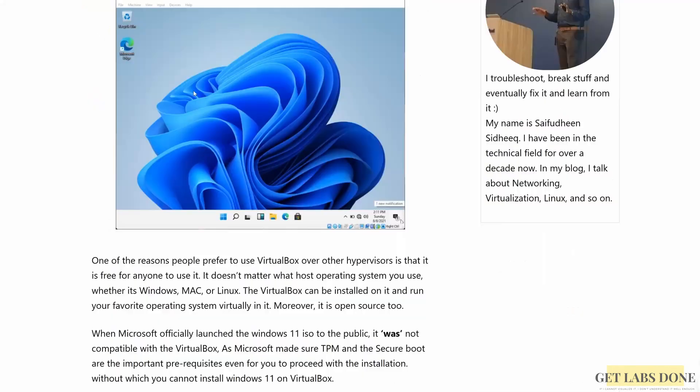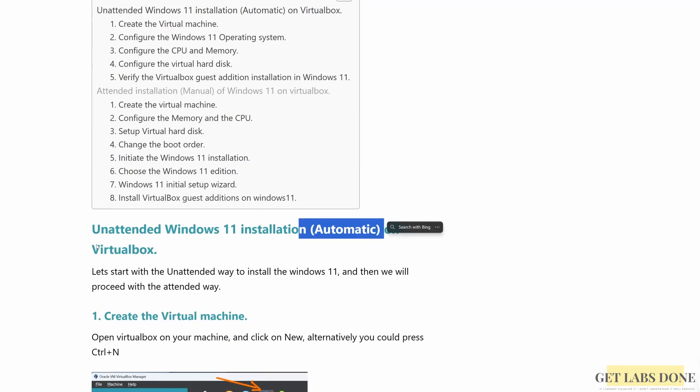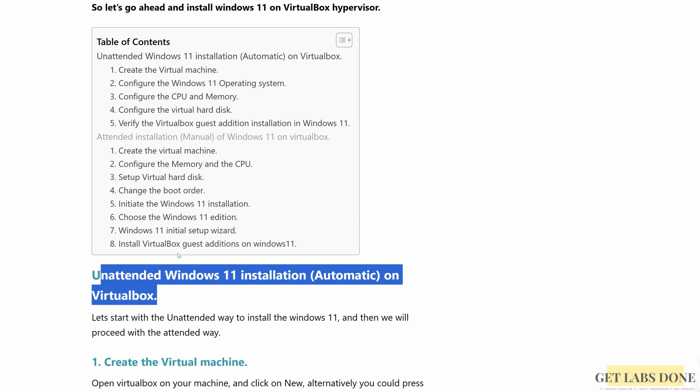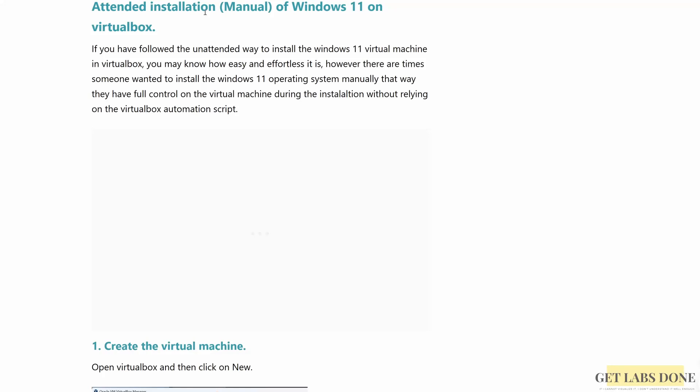I would always use the unattended installation if I want to quickly set up the Windows 11 VM on VirtualBox. If that's what you want, I would highly recommend the unattended installation video, which I will link in the description below. While you don't have to make any choices during the unattended installation, you will need to keep making selections every step of the way during the attended installation — that's the main difference.